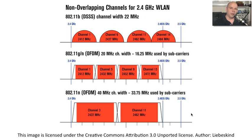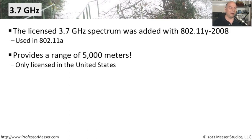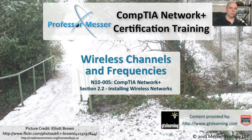Recently, a new type of frequency has become available: the 3.7 GHz range. This is only for 802.11a and was created specifically as a licensed spectrum. You can't just buy a device and run 3.7 GHz unless you have specifically obtained a license to do so. When you do, you can operate at very high speeds over a very long distance at high power — up to 5,000 meters over 802.11a. This is primarily used in the United States, and not many places around the world use it. Government agencies or organizations with specific needs might license the 3.7 GHz spectrum for this purpose.